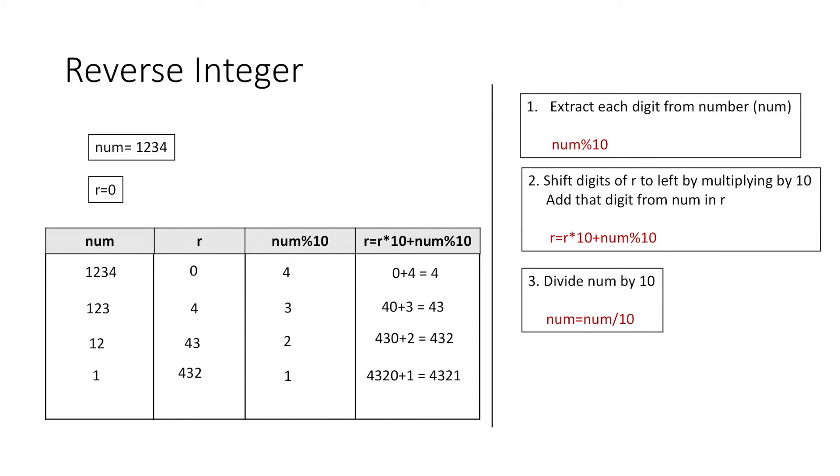Therefore now in the final step, again dividing num by 10, the value of num would be 0 and we have already stored the reverse number in r which is 4321. Therefore we have to repeat steps 1, 2 and 3 until num is greater than 0.